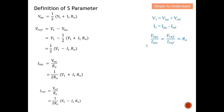For the incident current, it is simply the incident voltage divided by R0. Since I've already found the incident voltage expression, dividing everything by R0 gives the incident current in terms of V1 and I1. Similarly, for the reflected current, it equals V_reflected over R0. Using the reflected voltage expression already derived and dividing by R0, I have successfully expressed the reflected current in terms of the terminate voltage and terminate current.